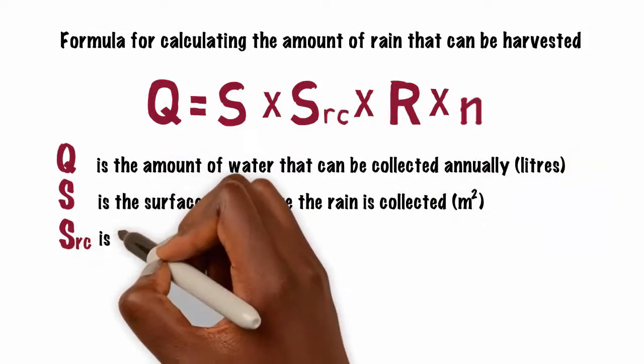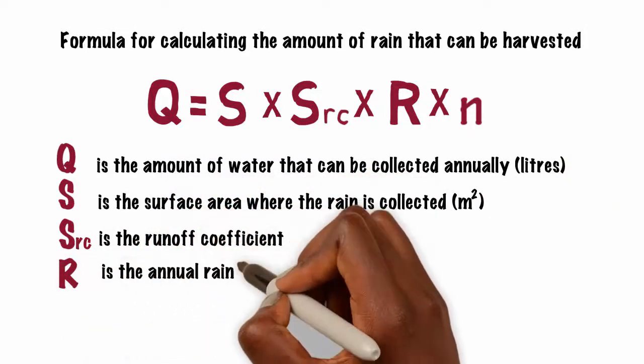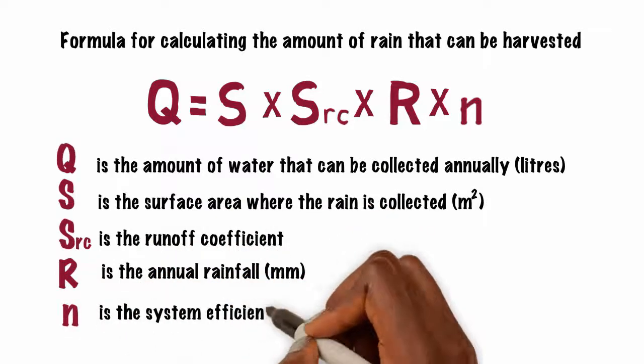S sub rc is the runoff coefficient, R is the annual rainfall in millimeter, and n is the system efficiency. For example,